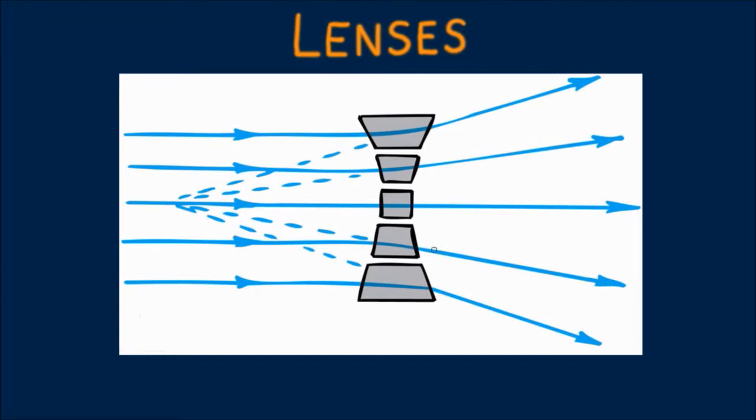In both converging and diverging lenses, the greatest deviation of rays occurs at the outermost prisms, because the angle between the two refracting surfaces is greatest there.